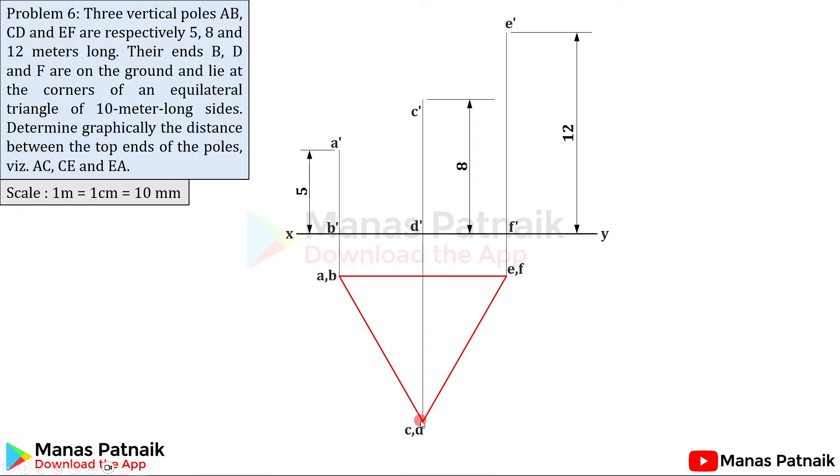Look how beautifully it has been dimensioned. So BD, the real distance between B and D is 10 meters at the bottom of the pole. The real distance between D and F is 10 meters at the bottom of the pole. We know this. What we have been instructed to calculate is to determine graphically the distance between the top ends of the poles.